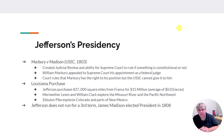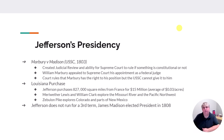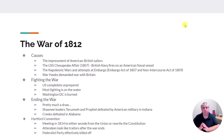By 1807, Jefferson says he's done being president and does not run for a third term. His hand-picked successor, James Madison, wins. The big thing during James Madison's presidency is the War of 1812, which many look at as the second American War of Independence — kind of, but kind of isn't.